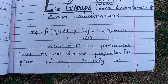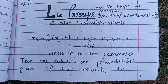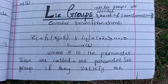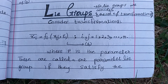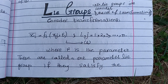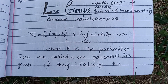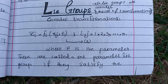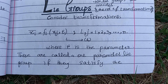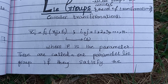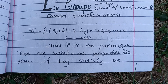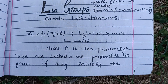But now, students, our main topic is Lie groups. In group theory, you know, for checking that a given set is a group, we need to check four properties: closure, associative, identity, and inverse. These are the four basic properties, and if you want to check that the group is commutative or not, then you have to check the commutative law.